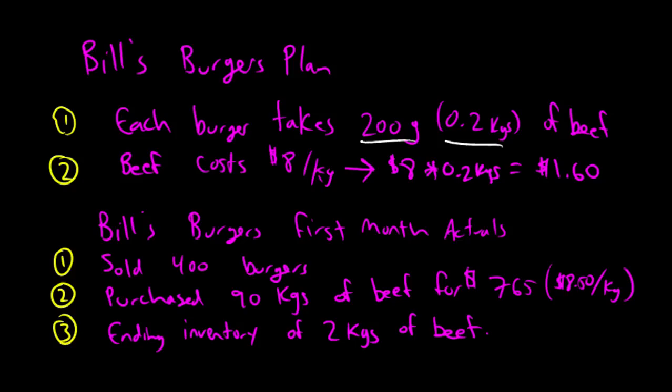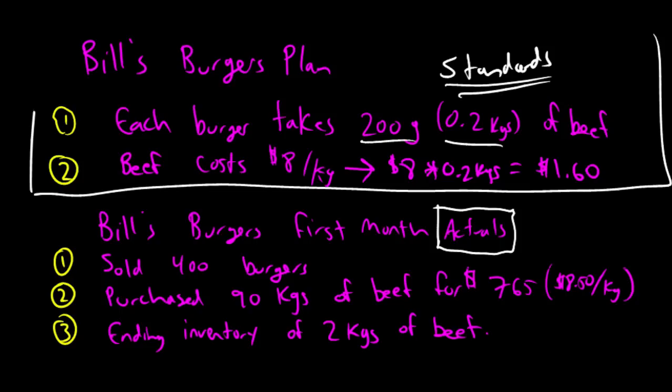Now, he goes through a month of business and here's what actually happens. This is where variances come in. They're useless for just planning. It's nice to have a plan, but where the real value from setting these standards comes in is when you actually compare what really happened to your plan. You compare your actuals to your standards. These are Bill's standards for making a burger, and down below, these are Bill's actuals. Here's what actually happened. Bill, in the next month, sold 400 burgers. During the month, he purchased 90 kilograms of beef. It cost him $765, $8.50 a kilogram. And he had an ending inventory of 2 kilograms of beef.